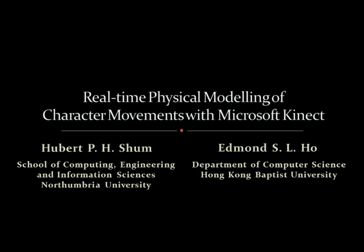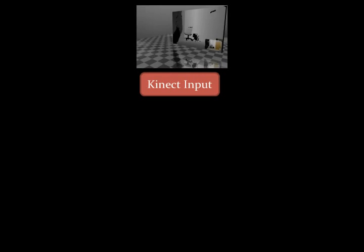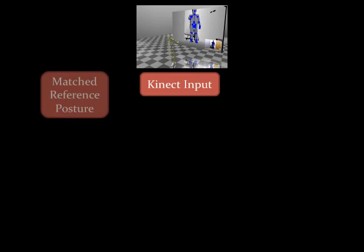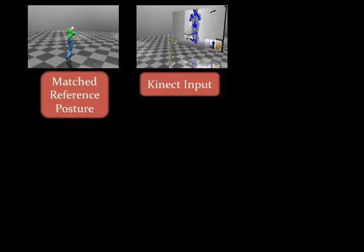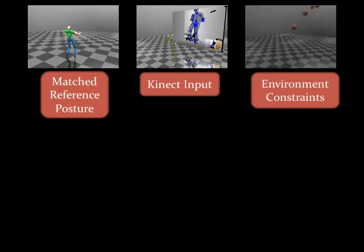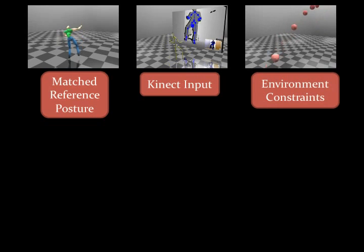In this paper, we propose a new method to physically model kinematic movements for simulating realistic scenes in real-time. One problem with physically modelling a character from a real-time posture captured from the Microsoft Kinect is the lack of certain information. To remedy this, a motion database is searched for the most similar pose, which then provides the missing information.